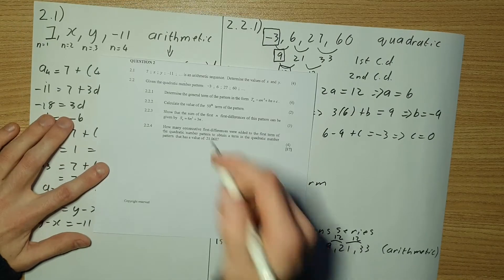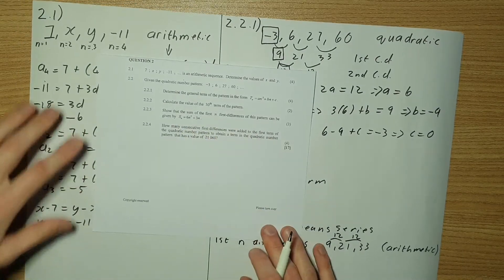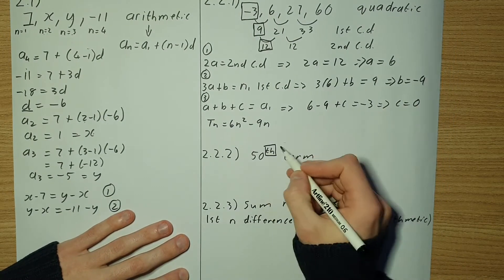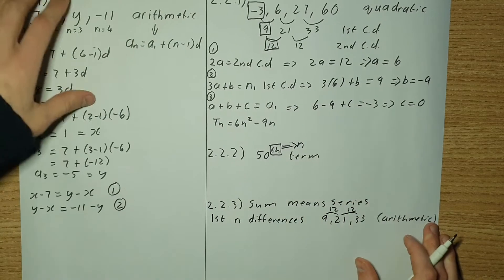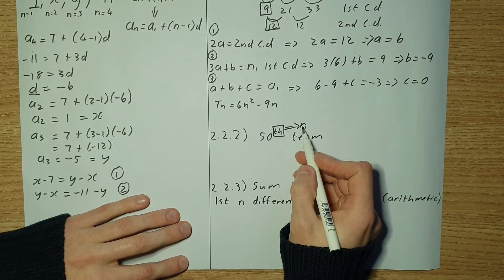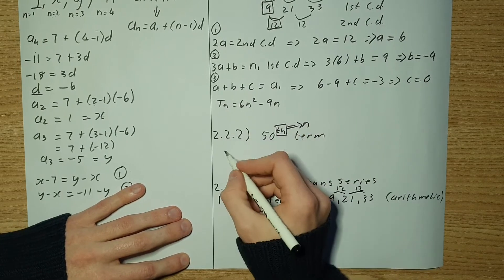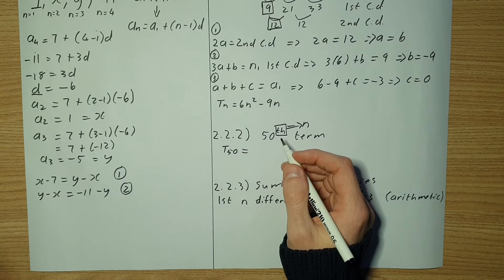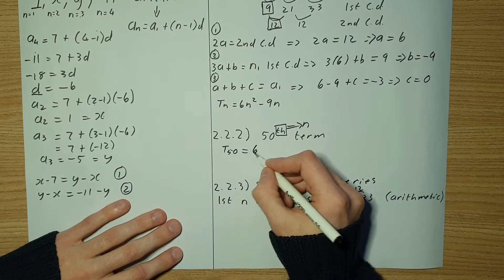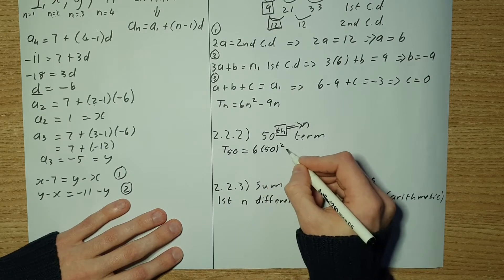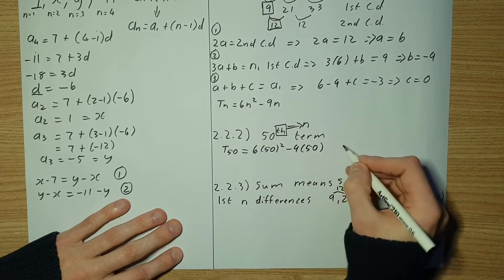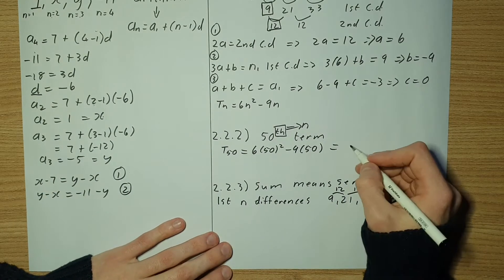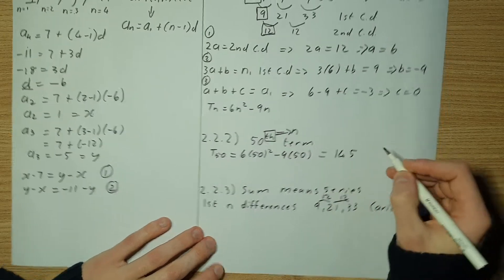The next question asks us to calculate the value of the 50th term of the pattern. The 50th term means n equals 50, so you just plug it into the formula. t(50) equals 6 times 50 squared minus 9 times 50. Plug that into your calculator and you should get a value of 14,550.